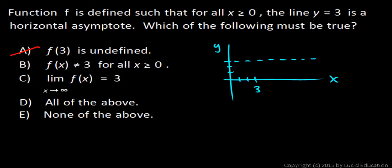f of x is not equal to 3 for all x values greater than or equal to zero. b is the tricky part. b is not necessarily true.